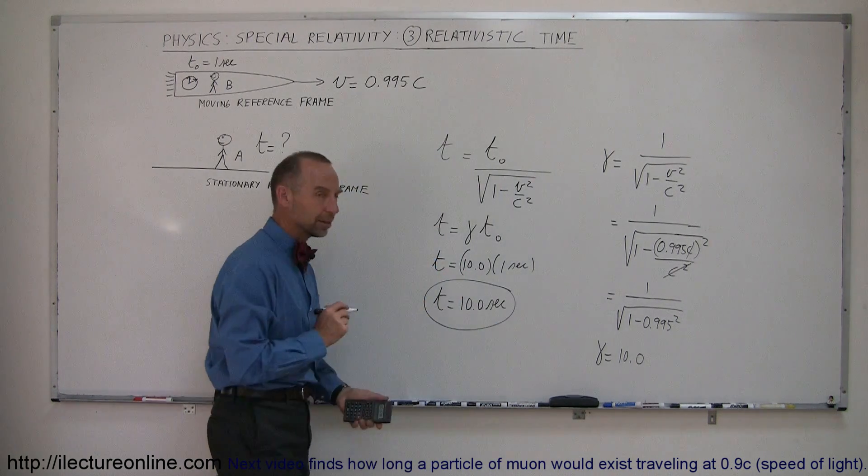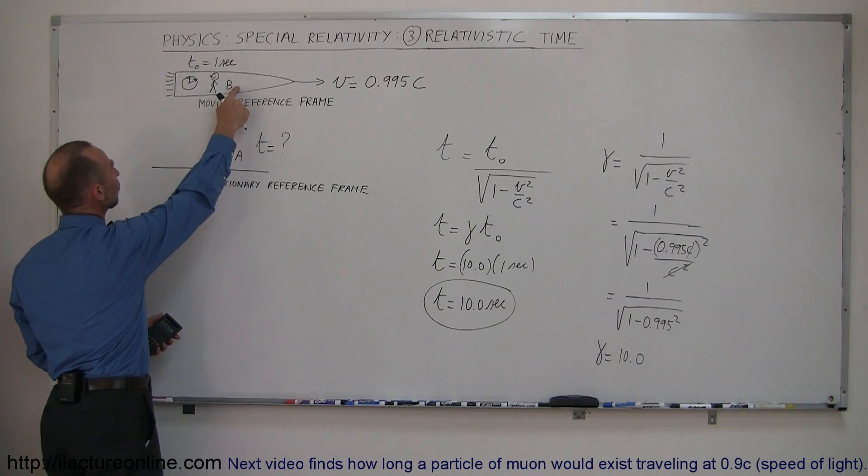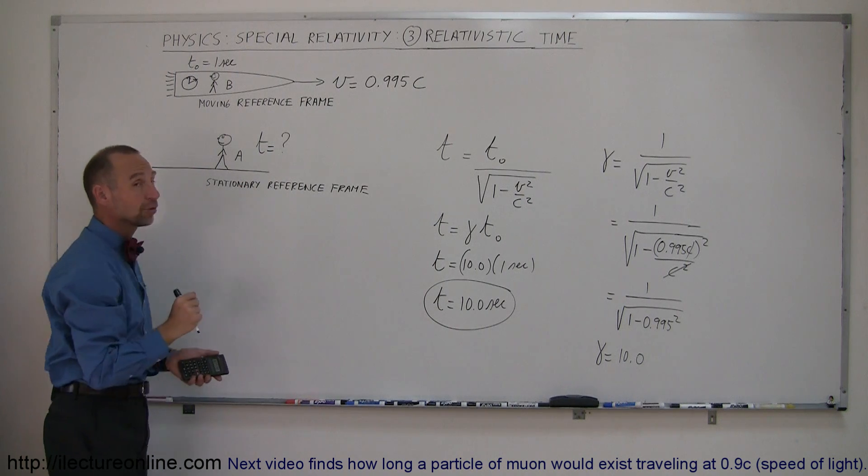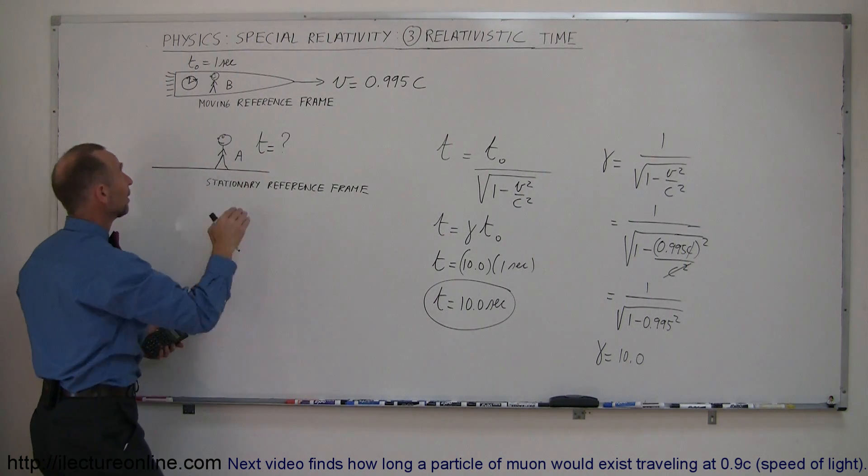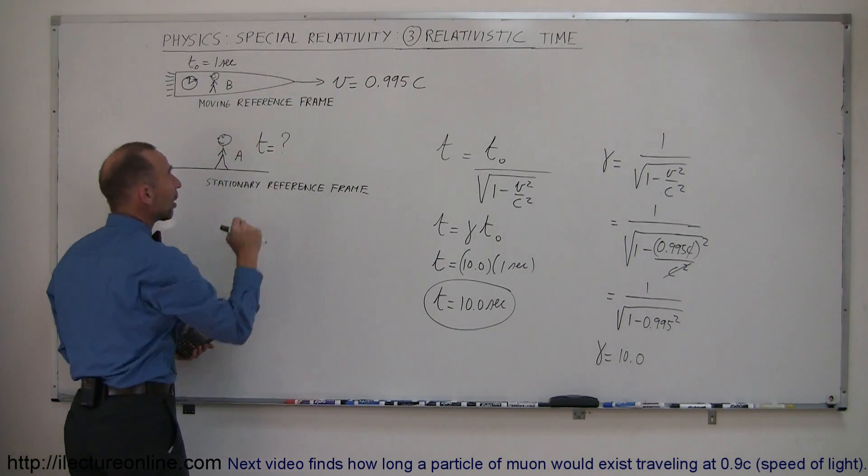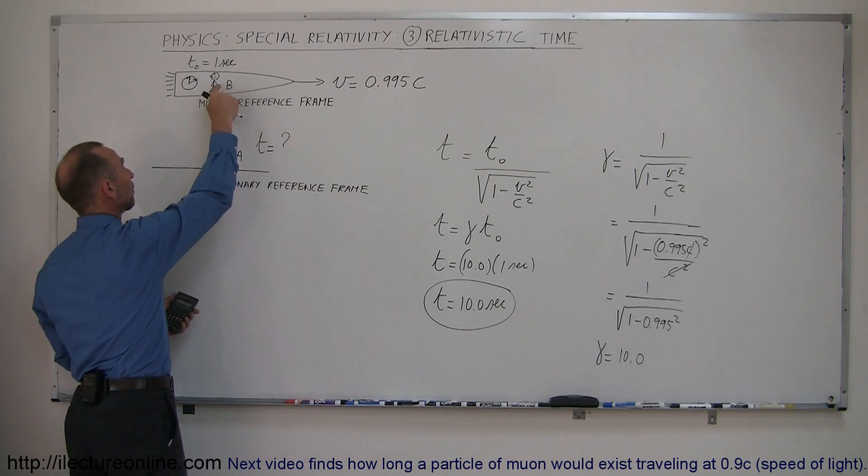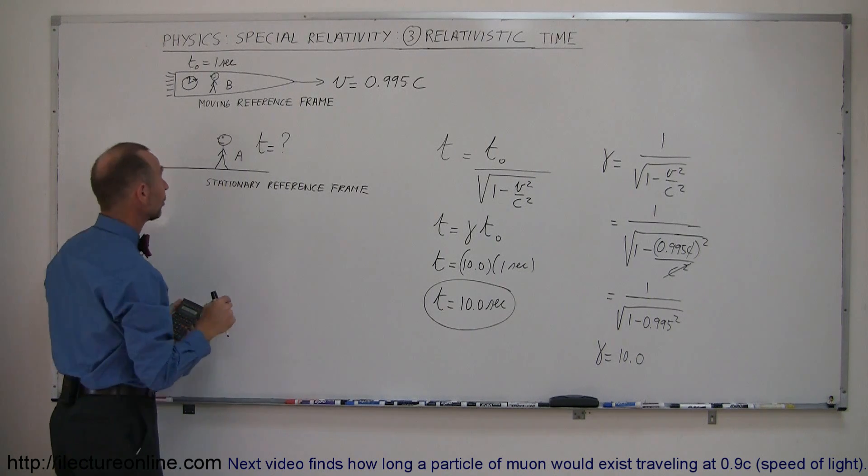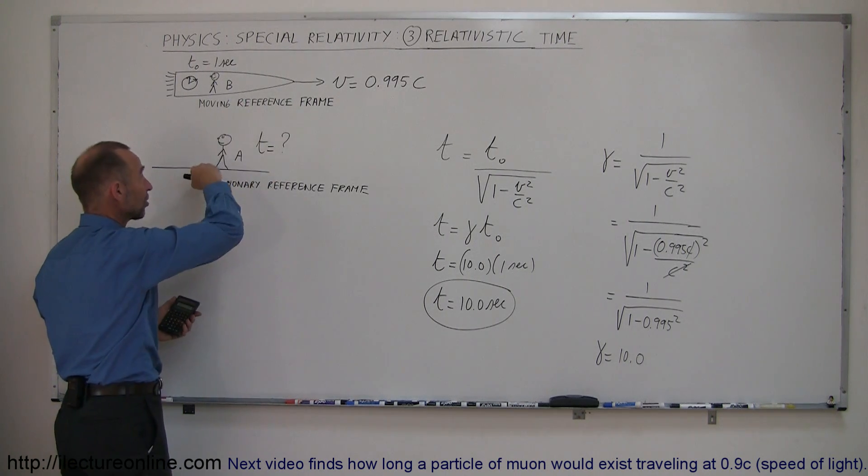This is kind of remarkable. When 1 second elapses for the person in the spaceship, 10 seconds elapse for the person left behind on Earth. So if the person goes on a one-year-long trip, as measured by the person in the spaceship, 10 years will have elapsed for the person left on Earth. In other words, if this person takes off and comes back after a year,